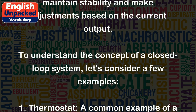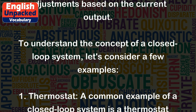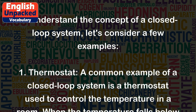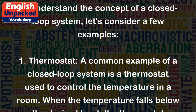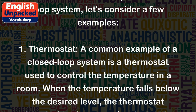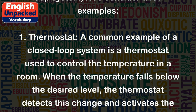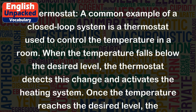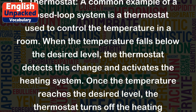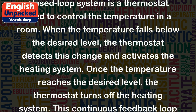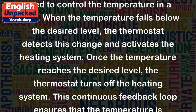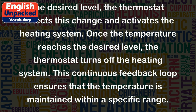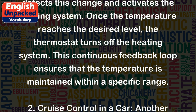Example 1: Thermostat. A common example of a closed loop system is a thermostat used to control the temperature in a room. When the temperature falls below the desired level, the thermostat detects this change and activates the heating system. Once the temperature reaches the desired level, the thermostat turns off the heating system. This continuous feedback loop ensures that the temperature is maintained within a specific range.